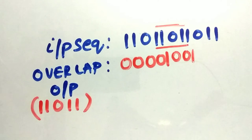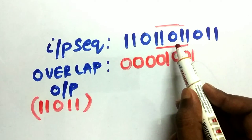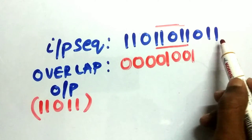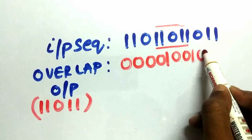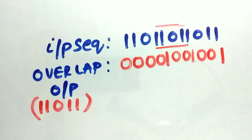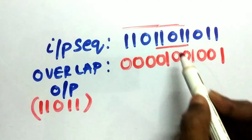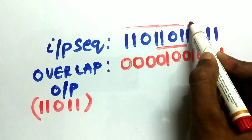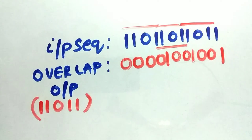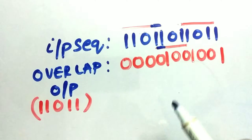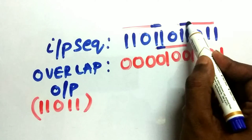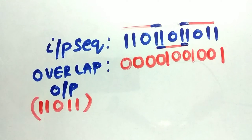We look at the output in a similar manner — from here to here not possible, from here to here not possible, but from here to here it is possible, so our output will be 1 after two zeros. As you can see it is overlapping — the first pattern, the second pattern, and the third pattern. These bits are being shared by two sequences, meaning they are overlapped with each other.